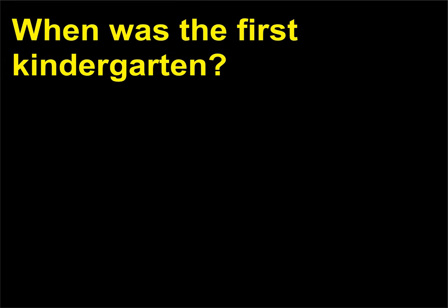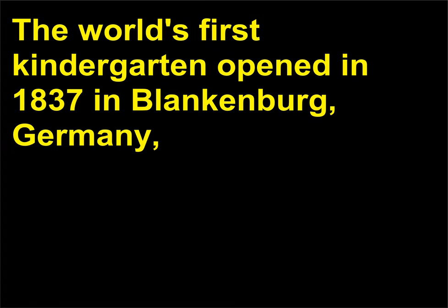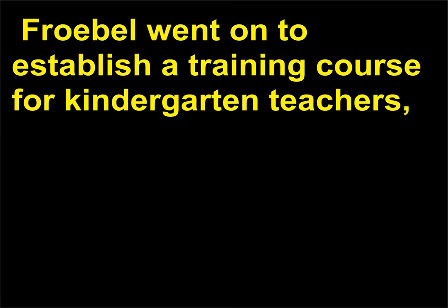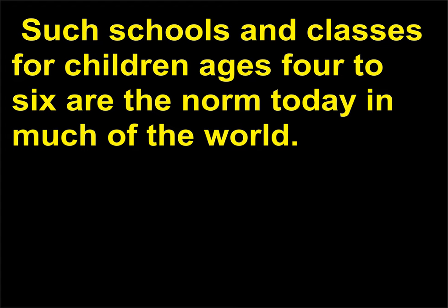When was the first kindergarten? The world's first kindergarten opened in 1837 in Blankenburg, Germany, under the direction of educator Friedrich Froebel, 1782–1852. Froebel went on to establish a training course for kindergarten teachers and introduced the schools throughout Germany. Such schools and classes for children ages 4 to 6 are the norm today in much of the world.